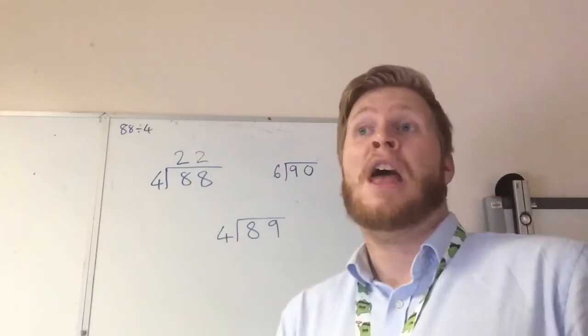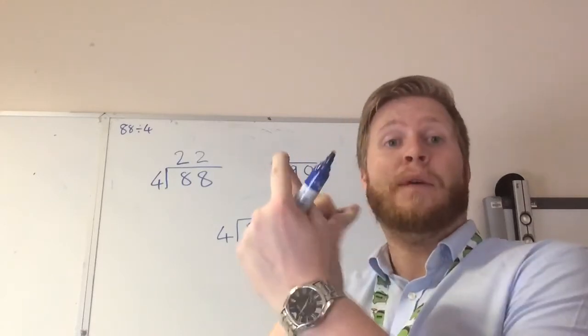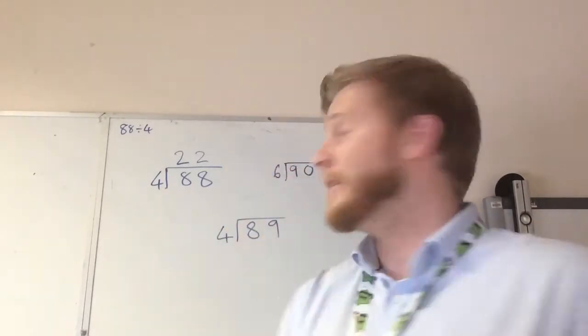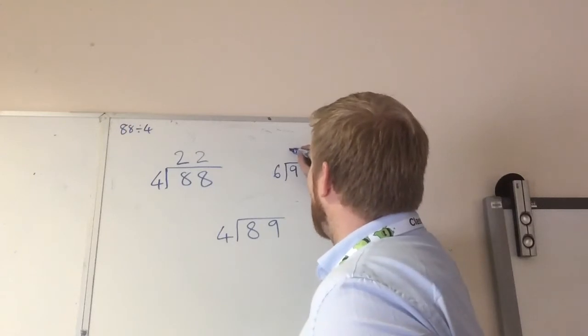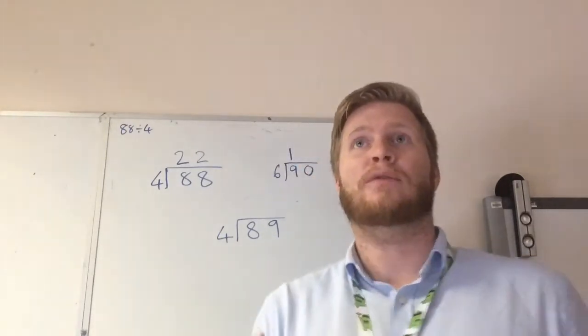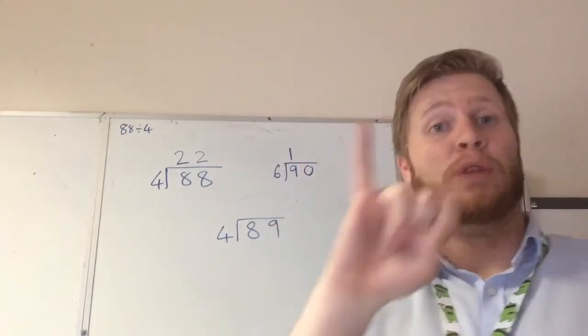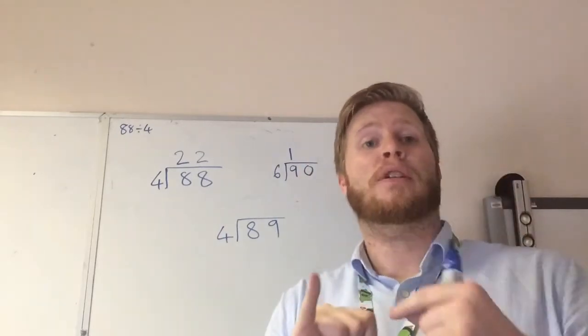So if we did the 6 times table we go 6, 12. Now we know 12's over, so we can't include that one. So there's only 1 six in 9. So we just put our 1 there. But we have some left over, because 1 times 6 is only 6. So we need to count on to the next number.